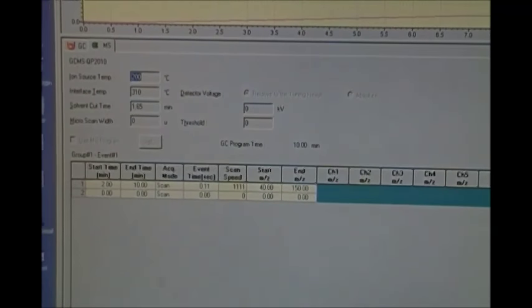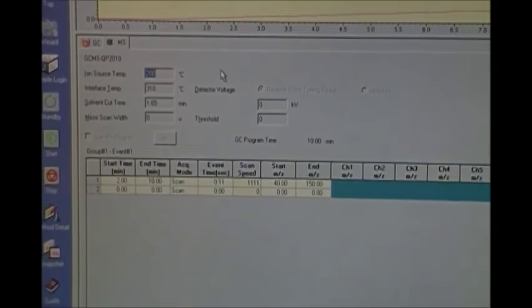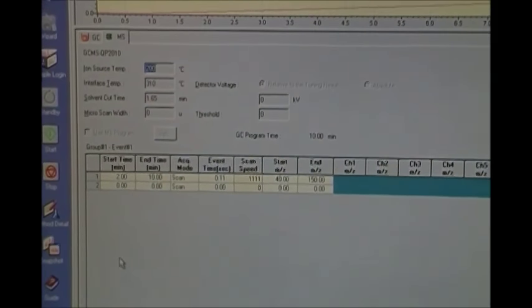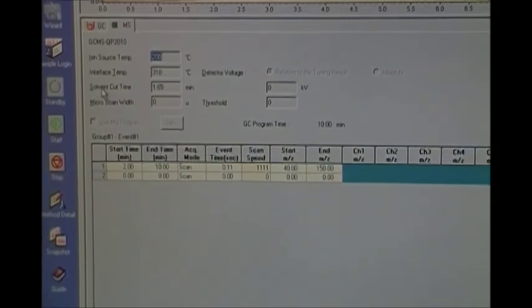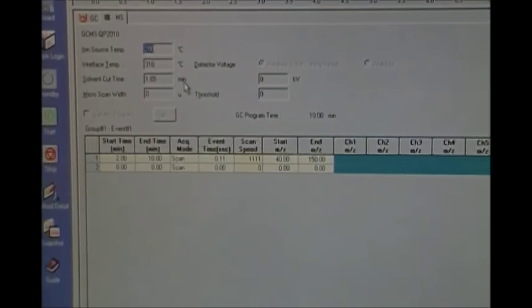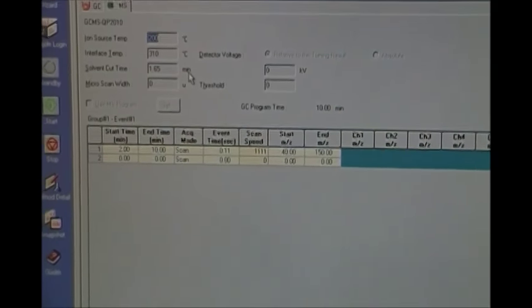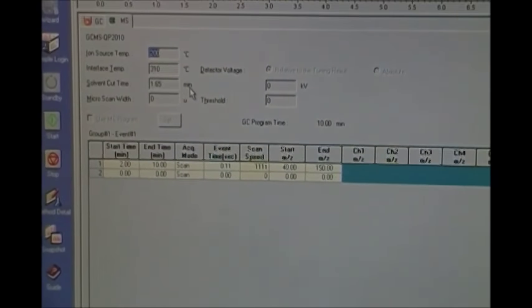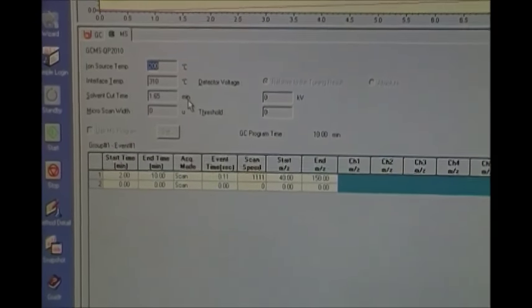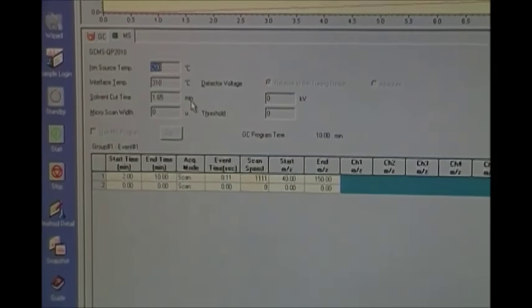And so we'll go over here to our method detail for the mass spec. Some of the things that we want to talk about is our solvent cut time, which is going to be 1.65 minutes. The purpose of a cut time is basically to keep the detector from getting overloaded. We wait to turn on the mass spec detector until most or all of our solvent has left the instrument.